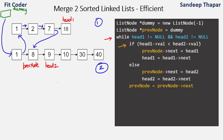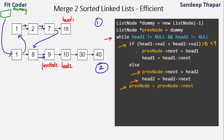Head1 is at 18 and head2 is at 9, so this is false. We link previous node (at 8) to head2, making next of 8 equal to 9, move head2 to 10, and advance previous node to 9. Again head1 is 18 and head2 is 10 — false again. We link previous node (at 9) to head2, making the blue link from 9 to 10, move head2 to 30, and advance previous node to 10.